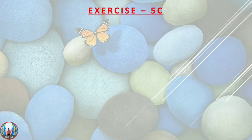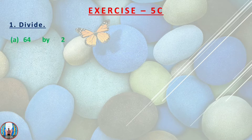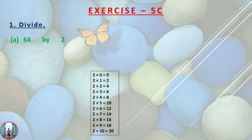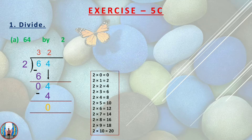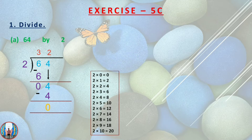Exercise 5c, question number 1. Divide: A) 64 by 2. Here we will use the long division method. First we write the table of the divisor, which is 2. Then we divide step by step: 2 threes are 6, 6 minus 6 is 0, then 2 twos are 4, and 4 minus 4 equals 0. So the quotient is 32 and the remainder is 0.